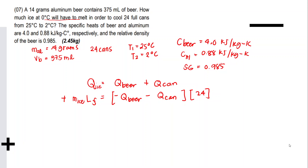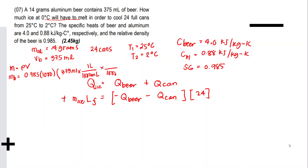We need the mass of the beer, which we don't have directly. We find it using ρV: mass of beer = 0.985 × 1000 × (375 mL × 1 L/1000 mL × 1 m³/1000 L), which equals 0.3694 kg.